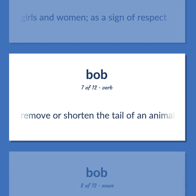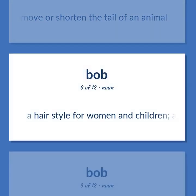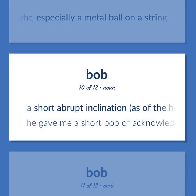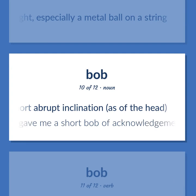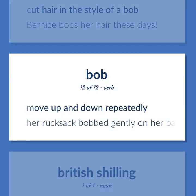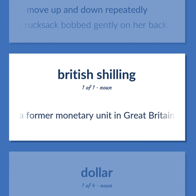Remove or shorten the tail of an animal. A hairstyle for women and children — a short haircut all around. A hanging weight, especially a metal ball on a string. A short abrupt inclination, as of the head — he gave me a short bob of acknowledgement. Cut hair in the style of a bob — Bernice bobs her hair these days. Move up and down repeatedly — her rucksack bobbed gently on her back. A former monetary unit in Great Britain.